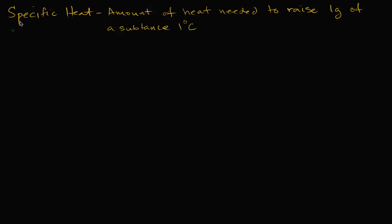In chemistry, there's a very valuable concept called specific heat. The specific heat is particular to a given substance — every substance has a different specific heat. It's defined as the amount of heat energy needed to raise one gram of a substance one degree Celsius. It tells us how much energy we have to put into something to heat it up.